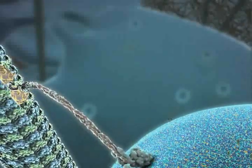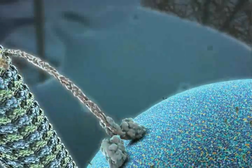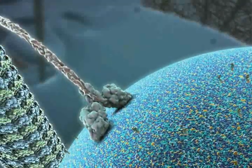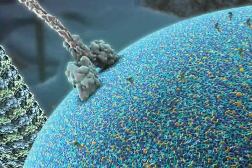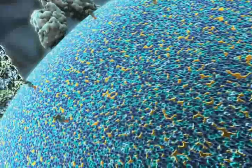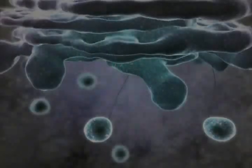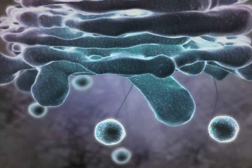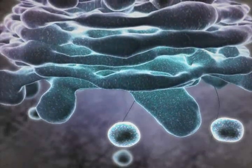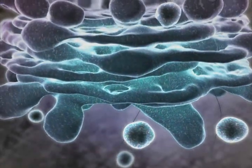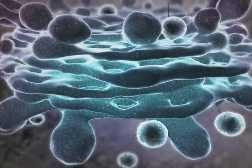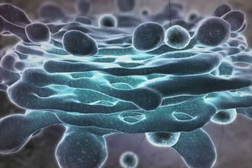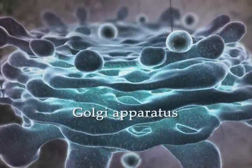Proteins are transported from the endoplasmic reticulum to the Golgi apparatus by vesicles traveling along the microtubules. Protein glycosylation, initiated in the endoplasmic reticulum, is completed inside the lumen of the Golgi apparatus.